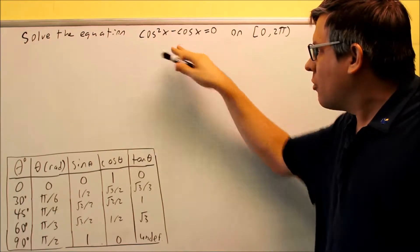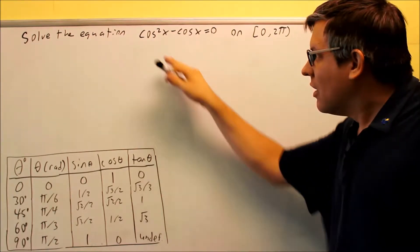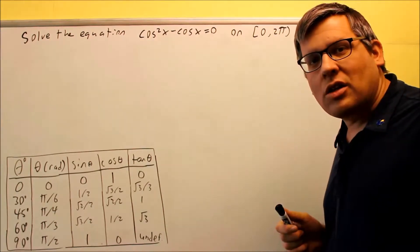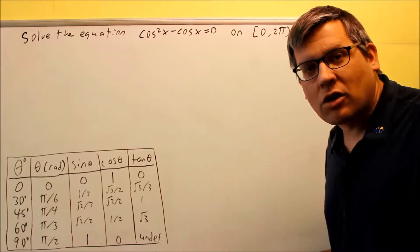So for this one, cosine squared minus cosine, what we notice here is there's a common factor of cosine that we can pull out. So that's the first thing you want to do is factor out a cosine.